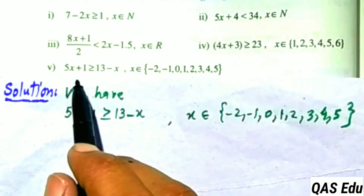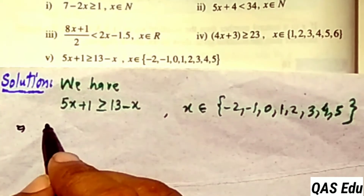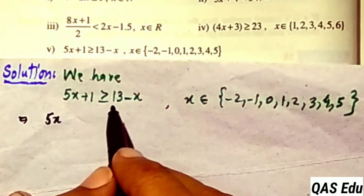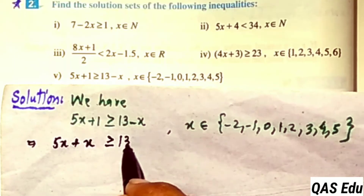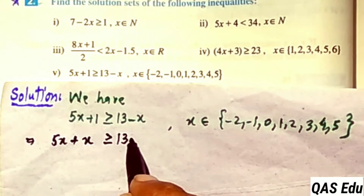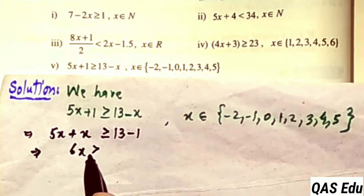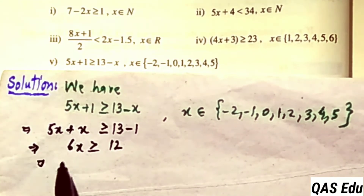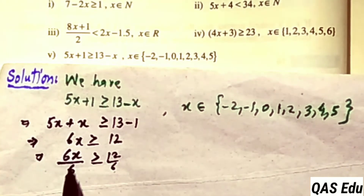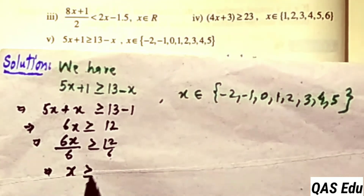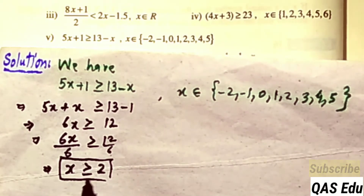Part 5: The linear inequality is given. Moving minus x to the left gives plus x, so 5x plus x is greater than or equal to 13. Moving plus 1 to the right gives minus 1: 5x plus x equals 6x, and 13 minus 1 equals 12. Dividing both sides by 6: 6x cancels to give x is greater than or equal to 12 divided by 6, which equals 2.